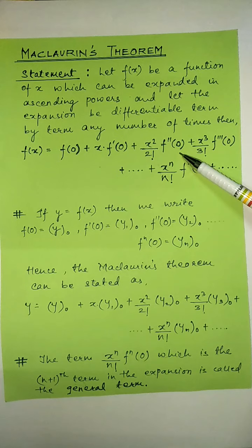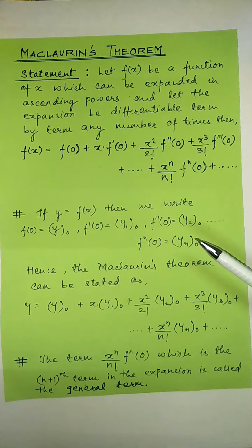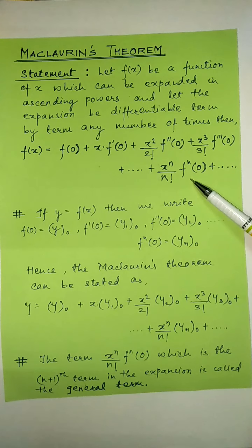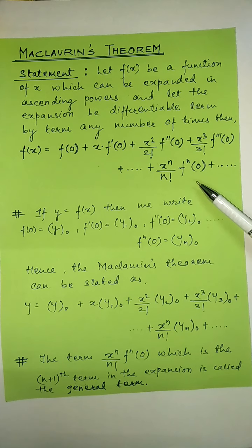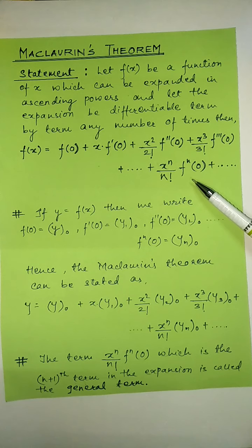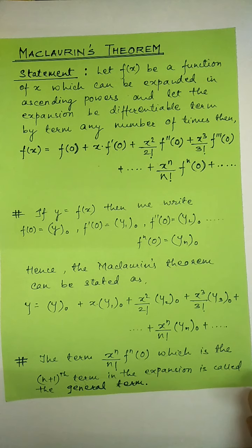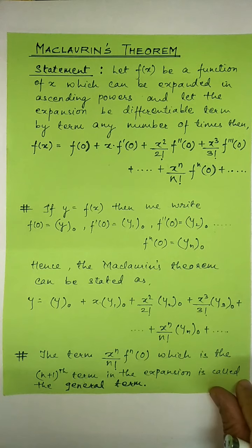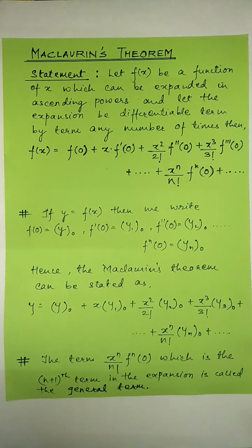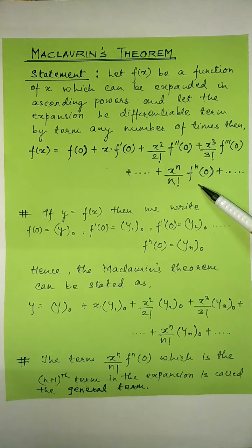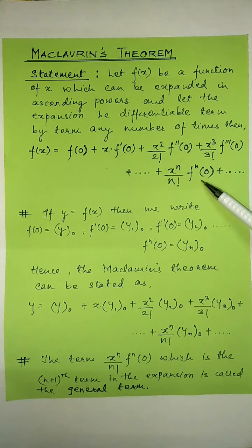Similarly, we will get f double dash of 0, f triple dash of 0, and this is f n of 0 — that is the nth order derivative of f of x when x is equal to 0. So this is the statement for Maclaurin's theorem, and this is the expansion for a given function, or we can say this is the Maclaurin's series.